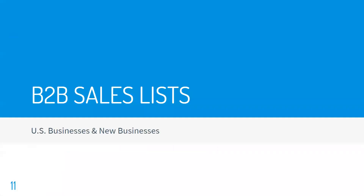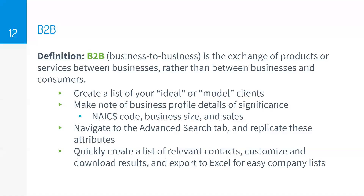Let's go ahead and start with a business-to-business sales list. B2B companies are companies that sell to other businesses rather than directly to consumers. My favorite example of a B2B company is the paper company Dunder Mifflin from The Office. Dunder Mifflin sells paper to other offices like law firms. In business-to-business marketing, a company might segment customers according to a wide range of factors, including industry, location, number of employees, and possibly products previously purchased from the company.